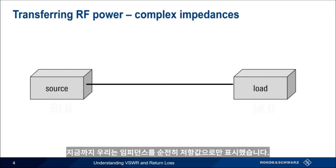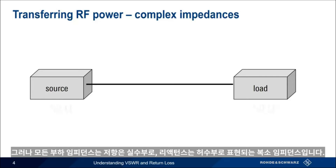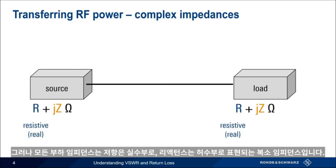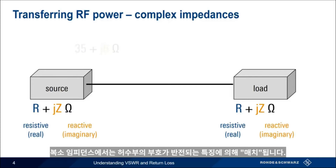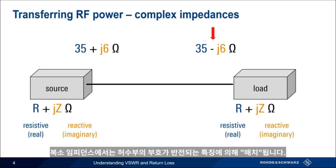So far, we've shown our impedances as purely resistive values, but in reality every load impedance is a complex impedance, consisting of both a real, resistive part and an imaginary, reactive part. A complex impedance is matched by its so-called complex conjugate, in which the sign of the imaginary part is reversed.